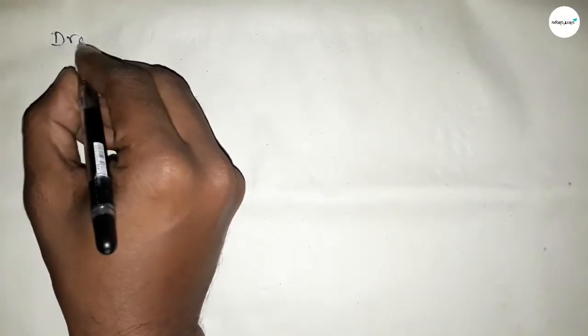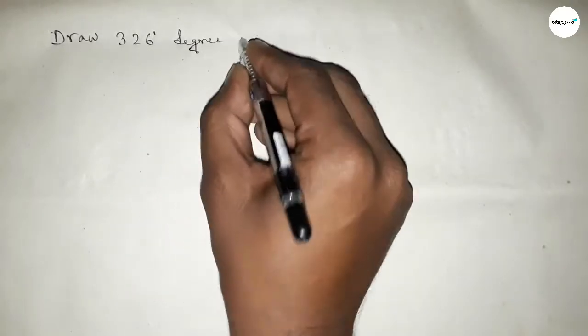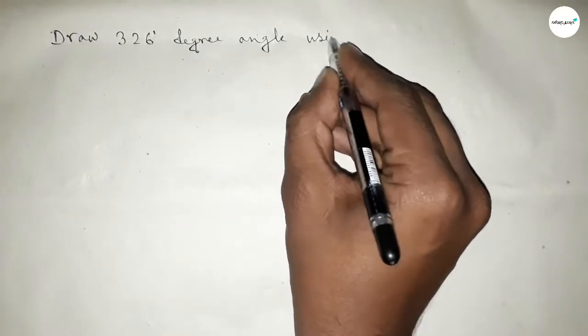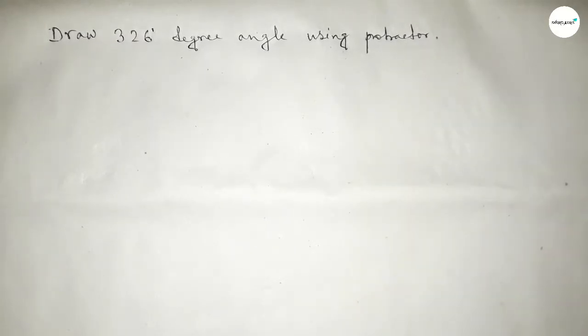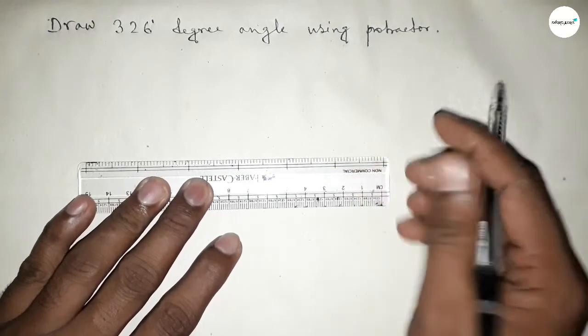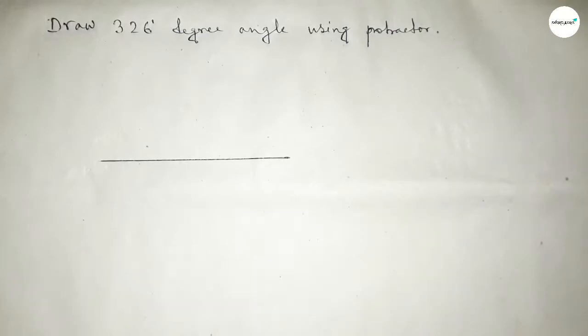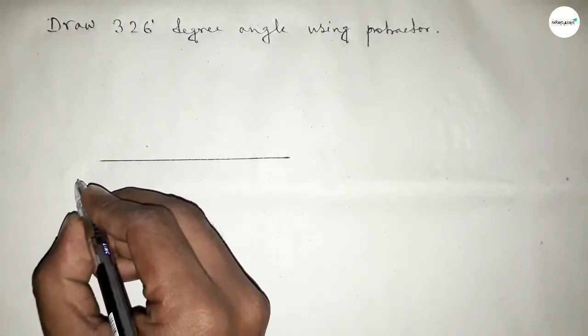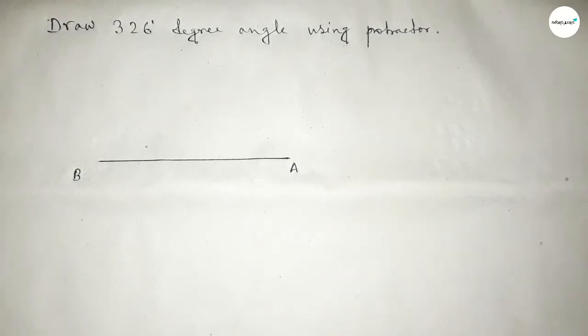Hi everyone, welcome to SSR classes. Today in this video, we have to draw a 326 degree angle using a protractor. So let's start the video. First of all, we have to draw here a straight line of any length. Drawing here a line of any length and taking here point B and here point A.